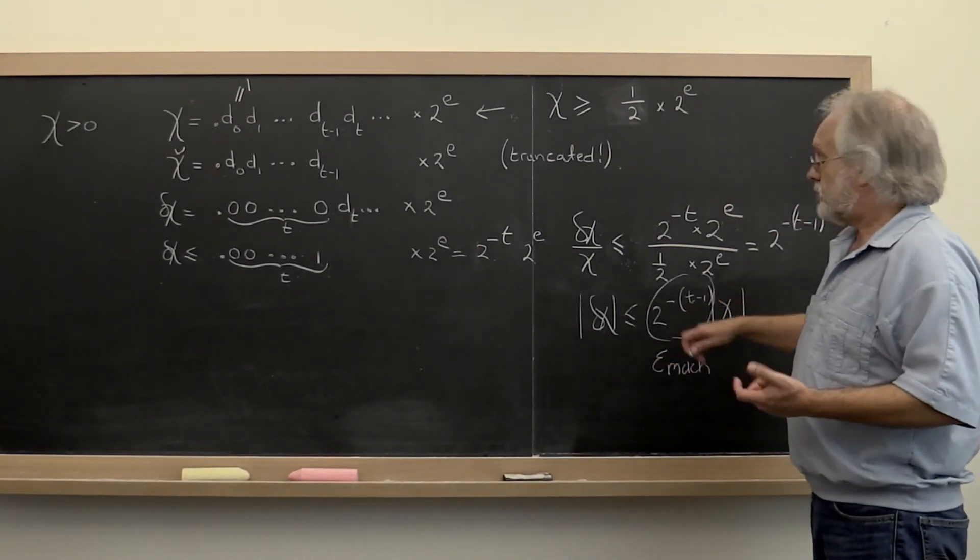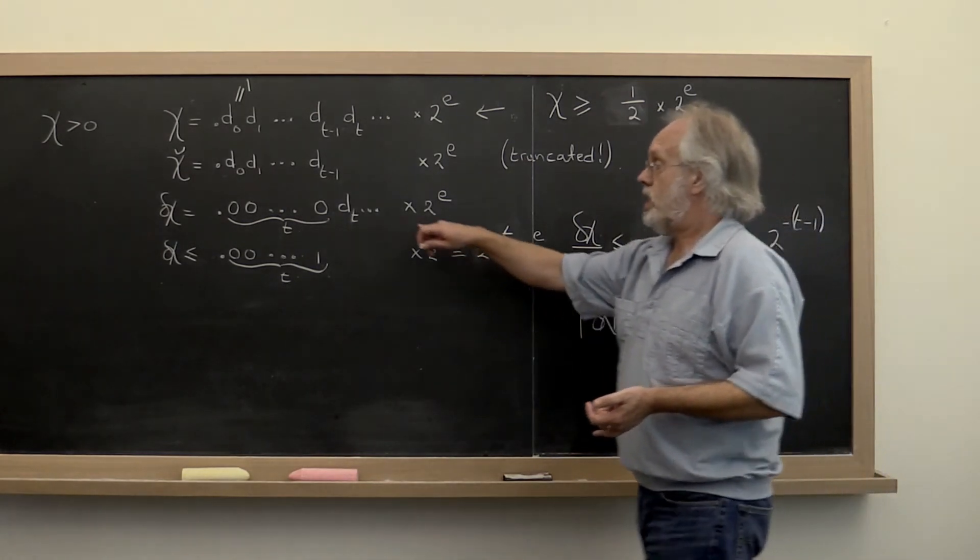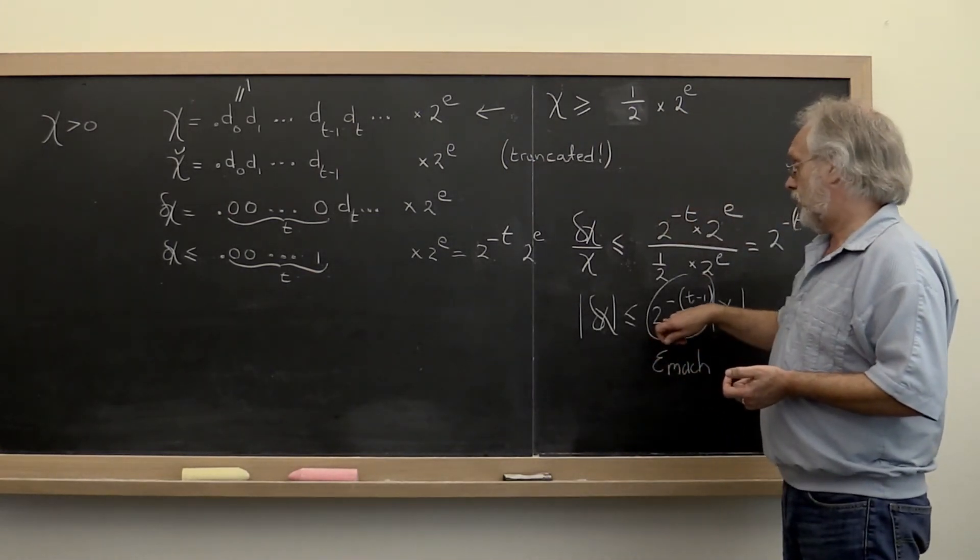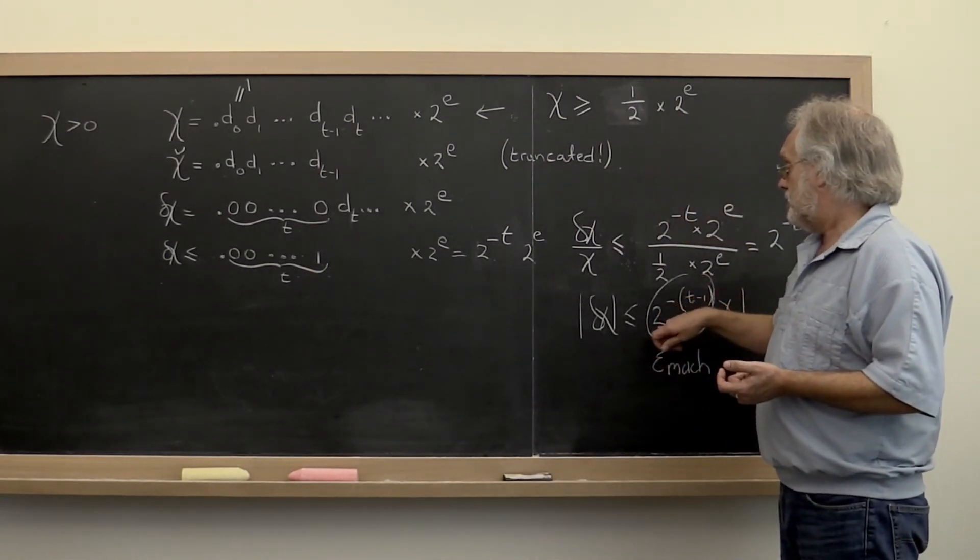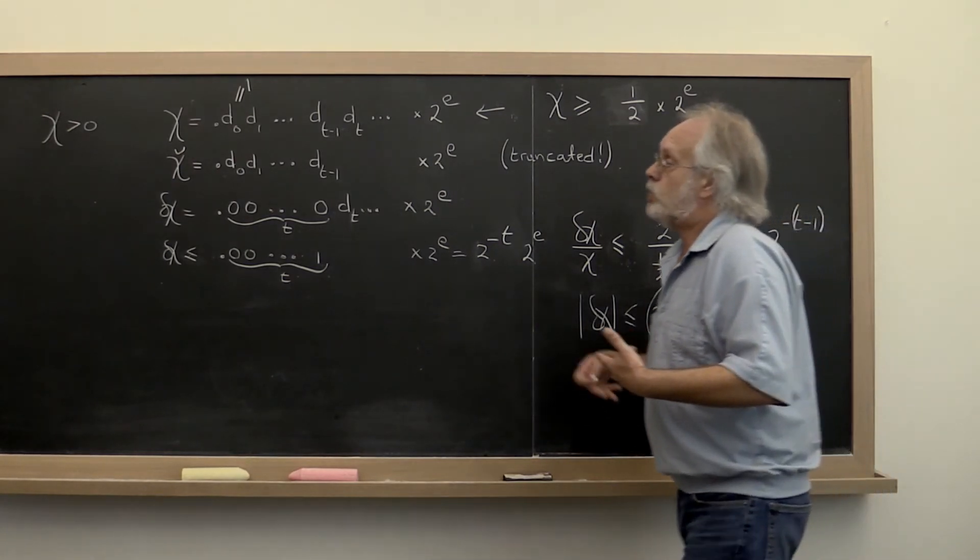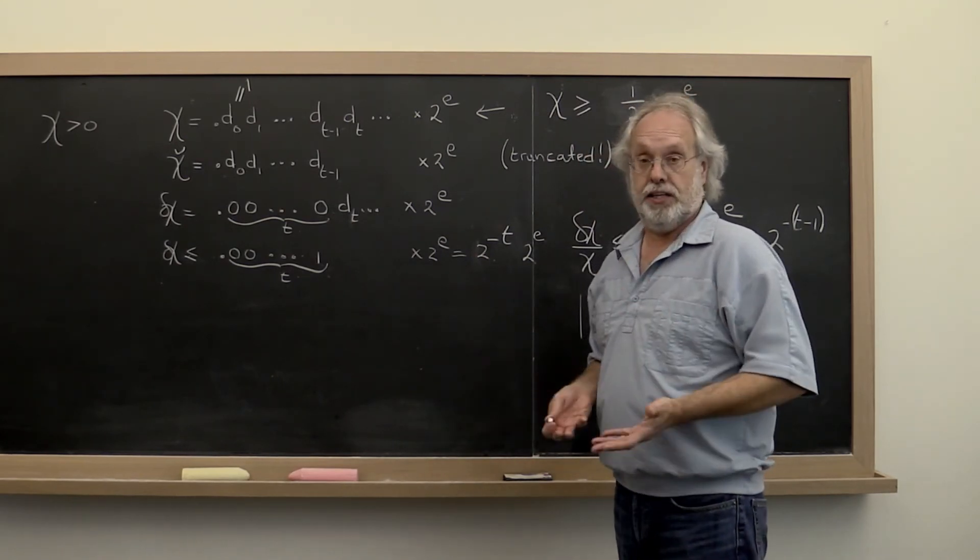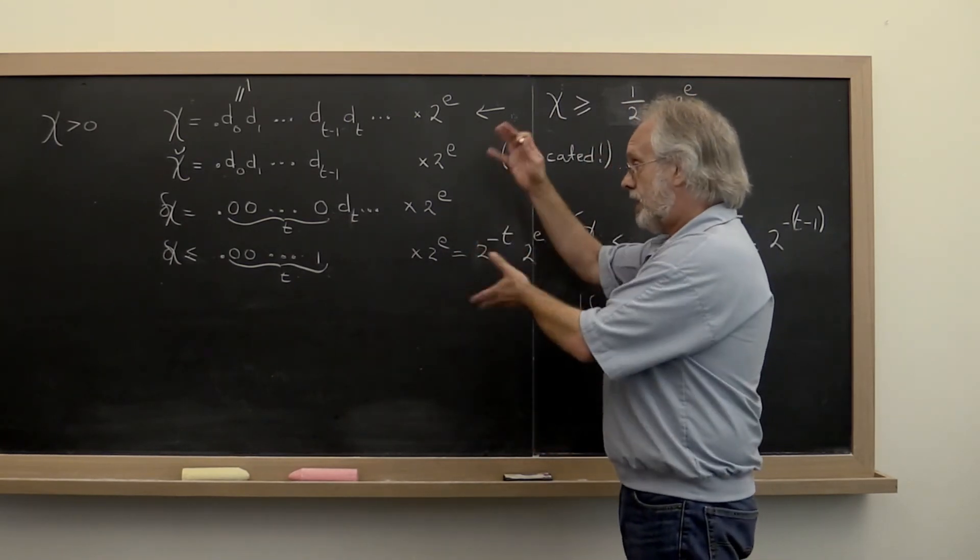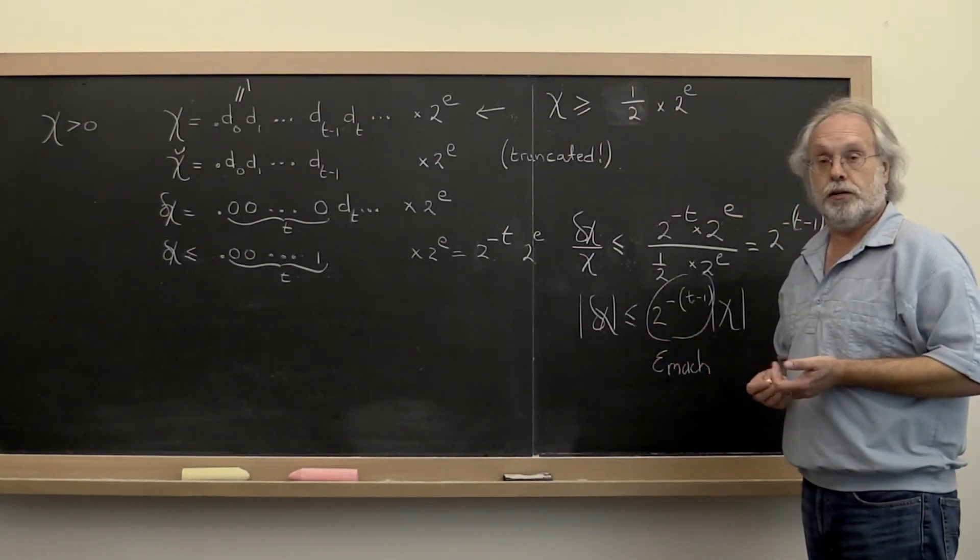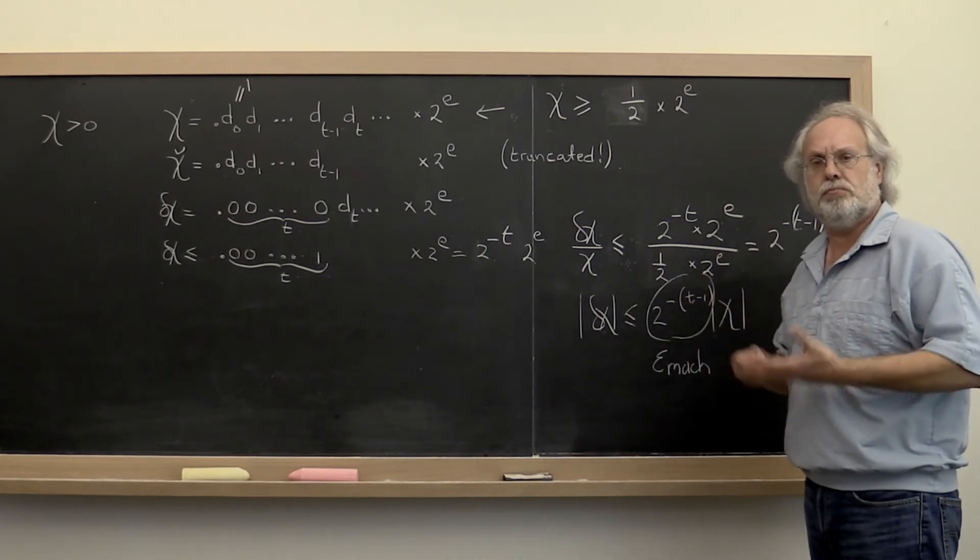And that machine epsilon depends on a lot of things. For example, had we rounded instead of truncated, then our machine epsilon would have become 2 to the minus t instead of 2 to the minus t minus 1. Had we stored decimal digits instead of binary digits, then the analysis would have been similar but a slightly different machine epsilon would have come out.